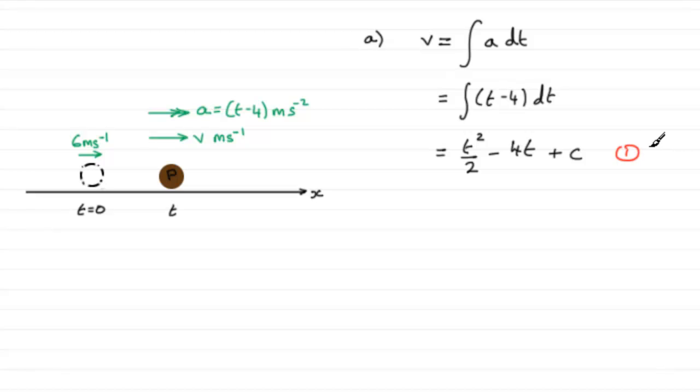We need to find out what that constant of integration is. To do that, we need to look at any conditions we're given. We were told that when t equals 0, velocity v was 6. So when t = 0, v = 6.